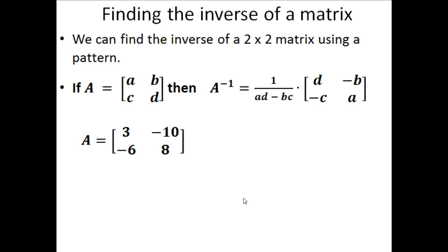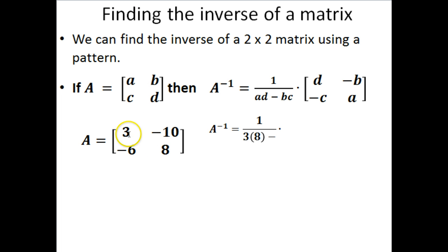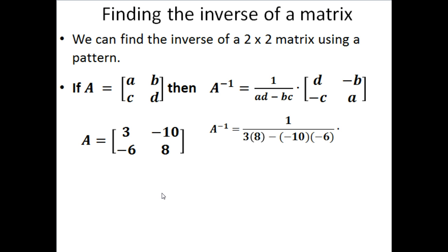For our example problem, we're going to use numbers instead of just the A, B, C, and D letters. Here's our example problem. We're looking for the inverse of this matrix, denoted as A to the negative 1. The very first step is A times D — so we're basically going to cross-multiply these two — which is 3 times 8. Then we're going to subtract B times C, which is negative 10 times negative 6, multiplied by this new matrix here.